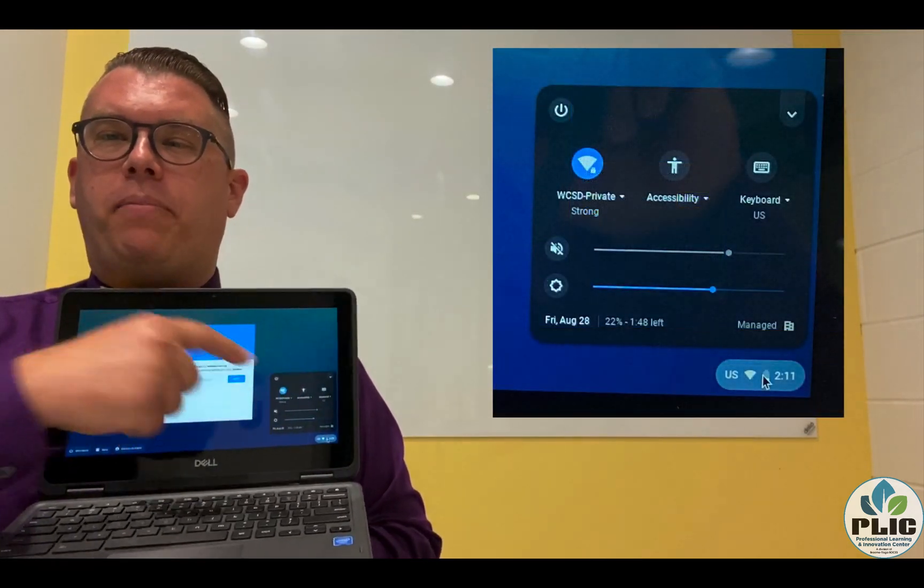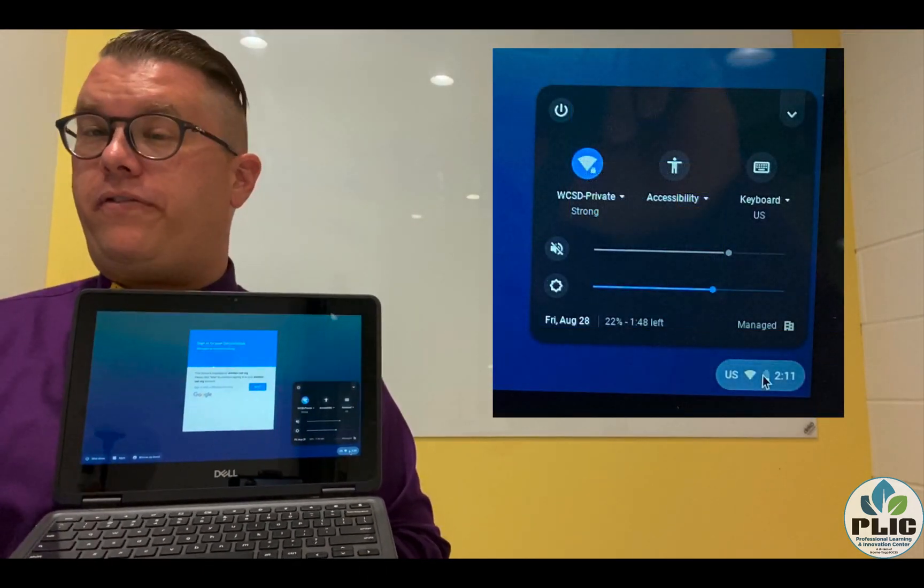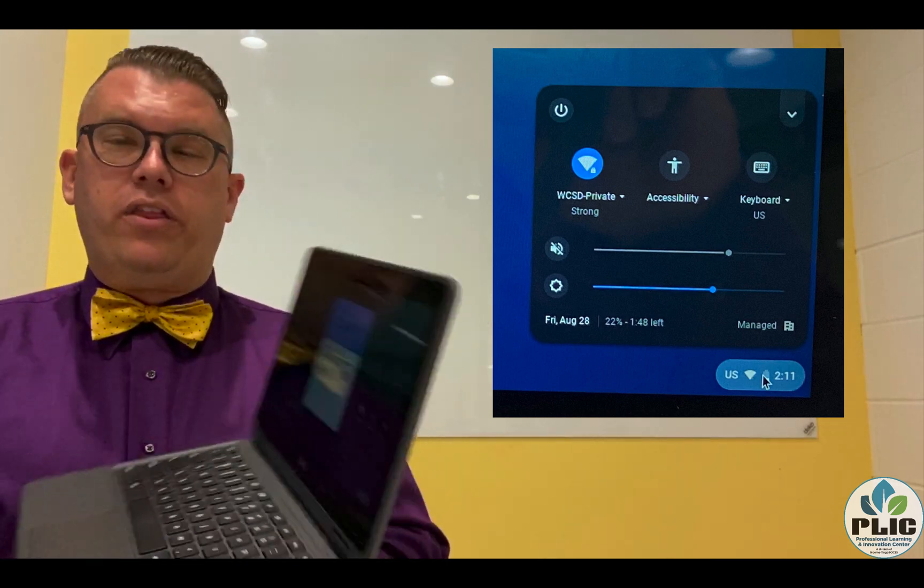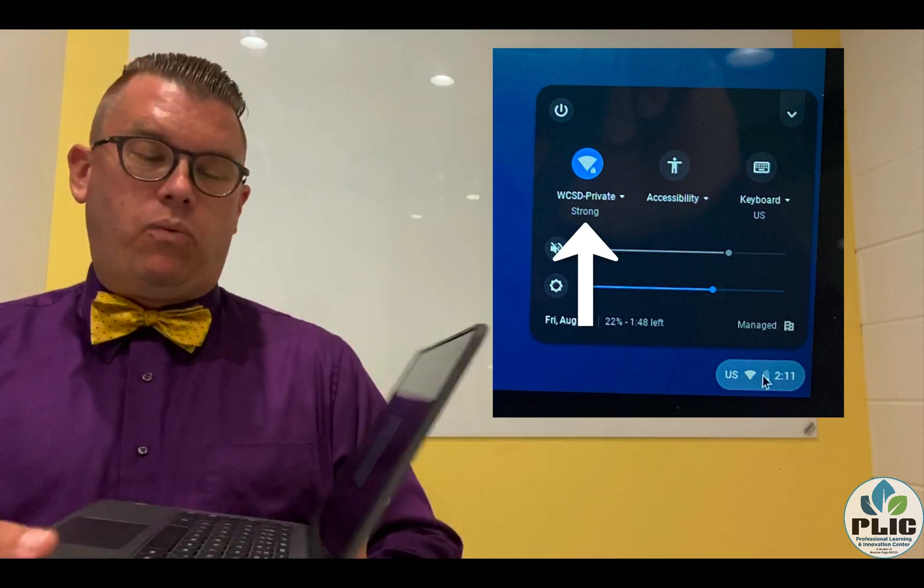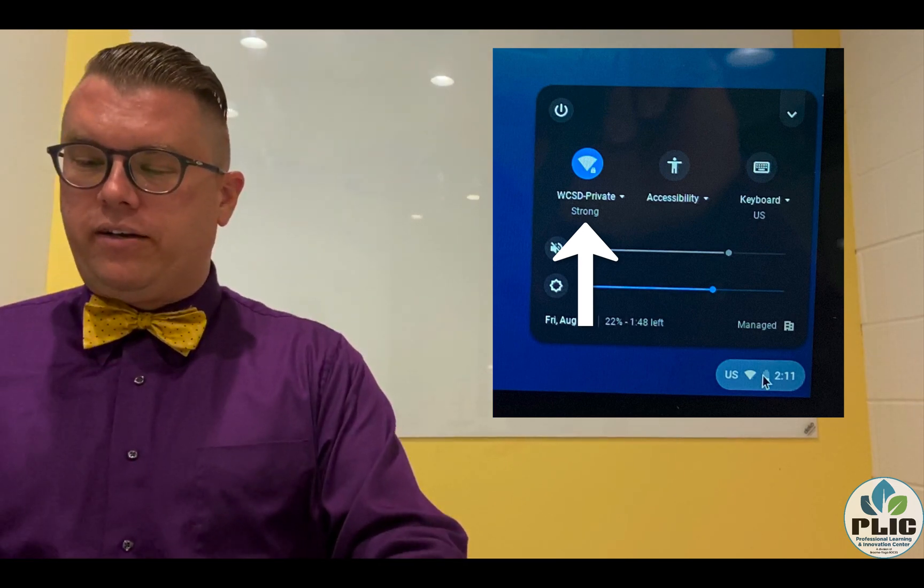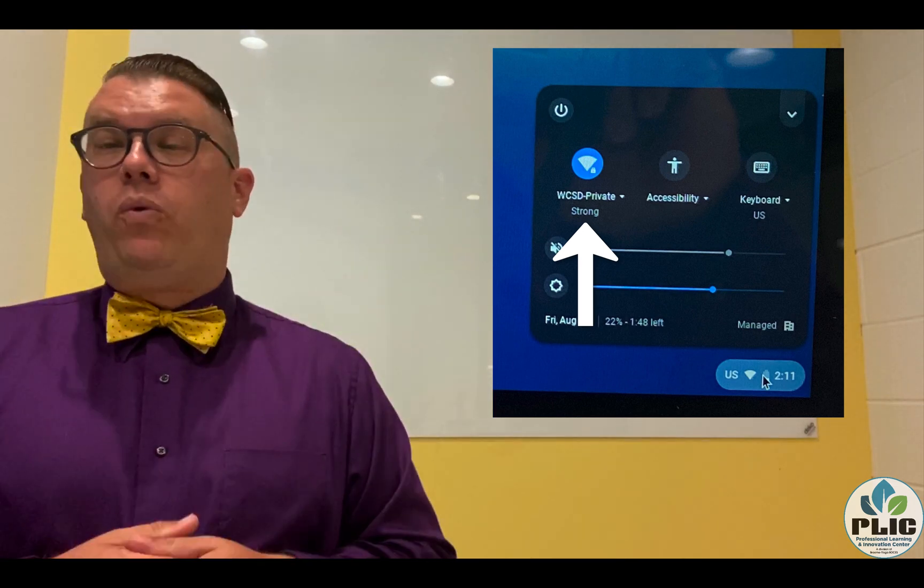If I click on that I'm going to get a little window that pops up with some more information. The first one I have here in my top left right now is my Wi-Fi. It looks like a little wedge and it tells me what Wi-Fi I'm on.